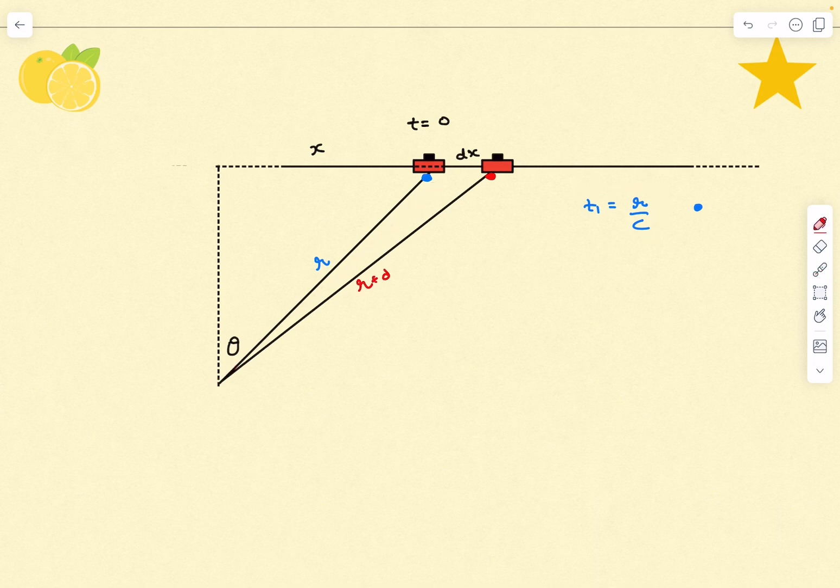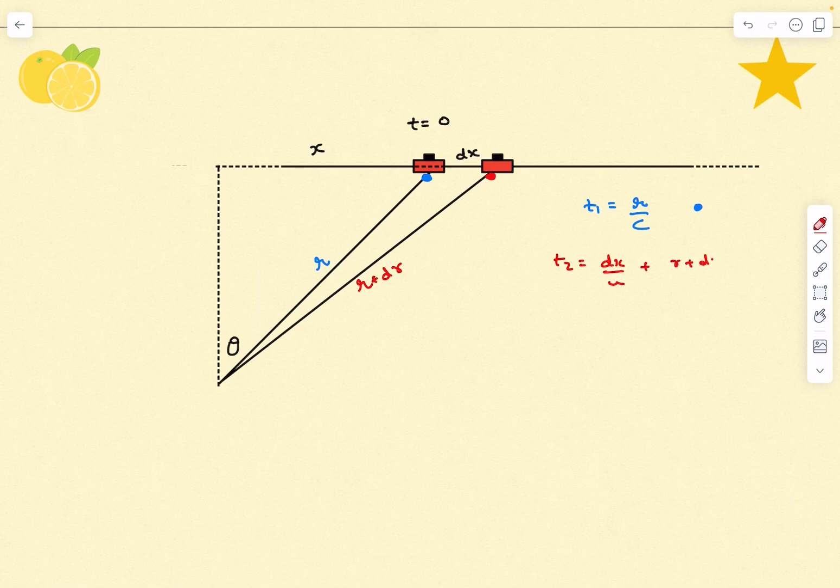Let's call this distance r + dr. After the blue pulse, it takes an additional time of dx/u plus (r + dr)/c for the observer to see the red light. Now let's try to understand this.